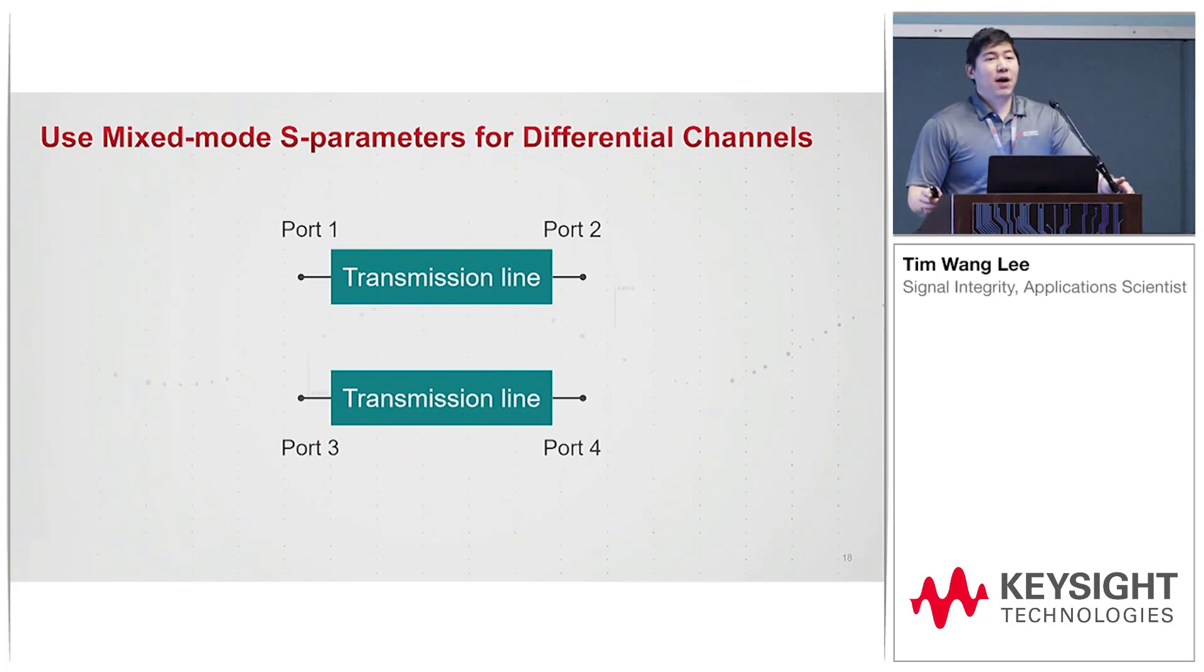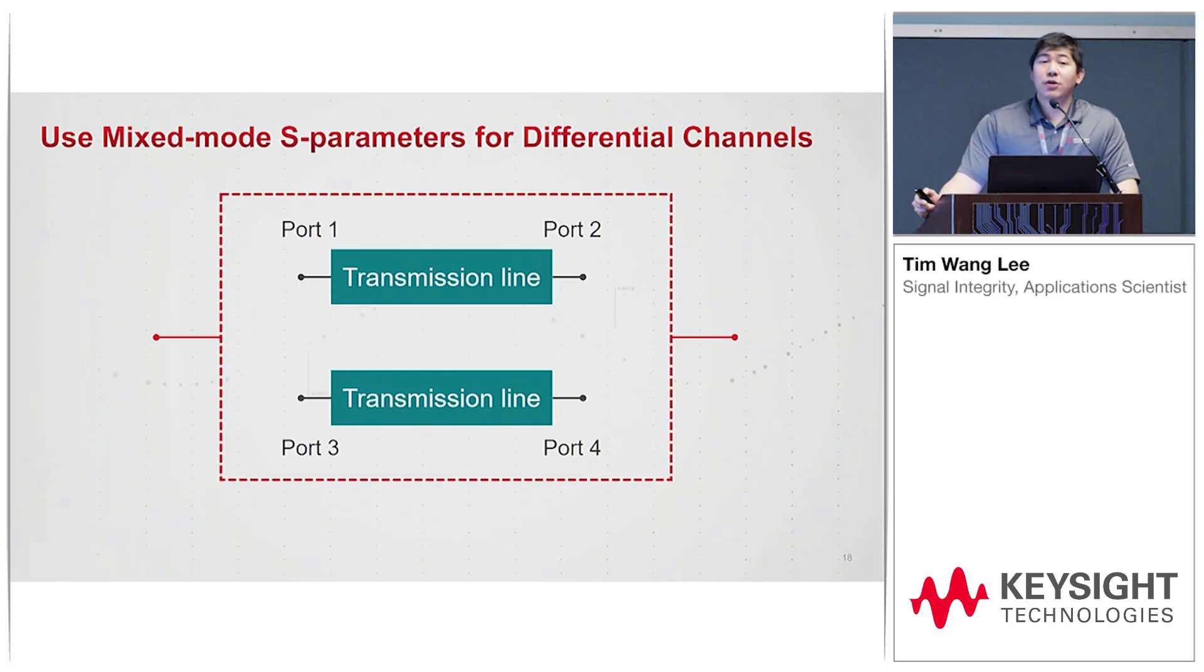Now when you have a differential channel to minimize noise, you'll pair two transmission lines together, that makes a differential pair. We'll look at differential port one to port two. Pay close attention to the port assignment here: on the top is port 1-2 and then bottom 3-4. In this way we can maintain our S21 understanding, that is the insertion loss, instead of calling it S31.